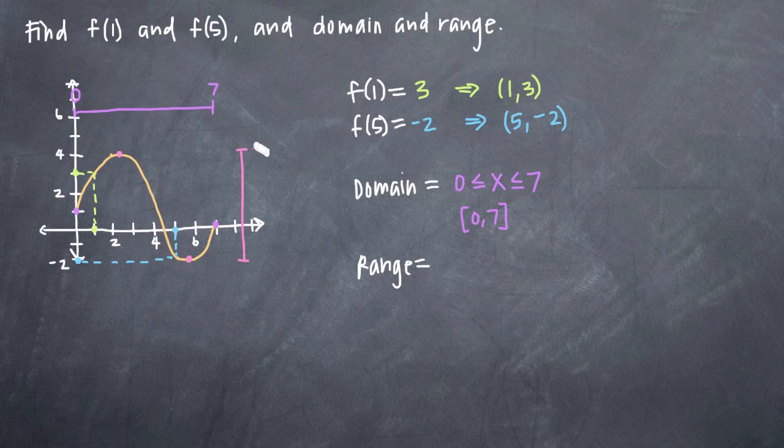The y coordinate at the top of our range here is 4 and at the bottom it's negative 2. So we can say that the range is y greater than or equal to negative 2 and less than or equal to 4. And again, we can write that as negative 2 to 4.